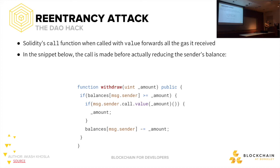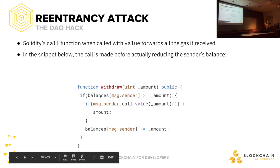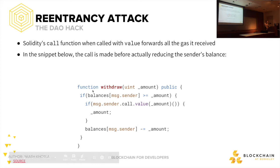This leads me to what is called a re-entrancy attack. Solidity's call function, when called with a value, forwards all the gas it receives for that transaction. Looking at the snippet: we check if the balance of message.sender is greater than the selected withdraw amount. If it is, we use message.sender.call to send the funds. But here's the problem — before we reduce the balance of message.sender, we make the call that sends the money. Think of it like a bank teller giving you money before subtracting the balance.